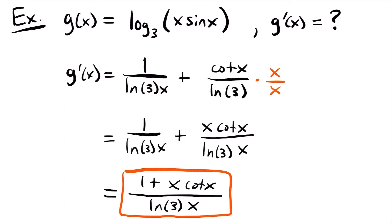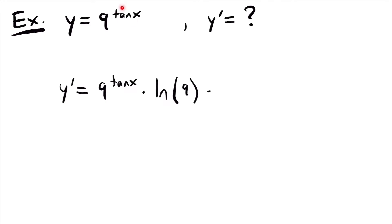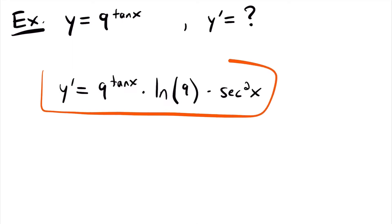And so this is the final answer for the derivative of the function g of x. Next we have y is equal to 9 to the power of tangent x, and we want to find y prime. Since we have an exponential function where the power is not just x, we are going to need to use the chain rule. So y prime is equal to 9 to the power of tangent x times the natural log of the base 9, times the derivative of that exponent. The derivative of tangent x is secant squared x, so we multiply by secant squared x. That is the derivative of this function.